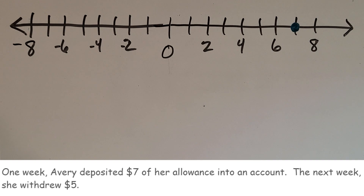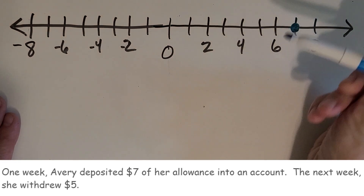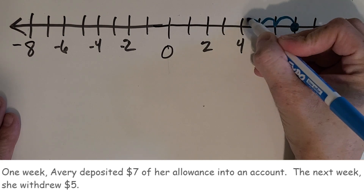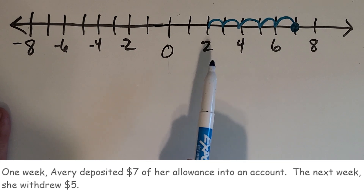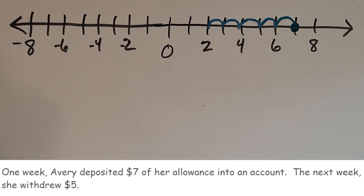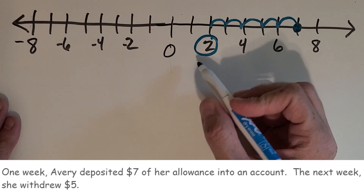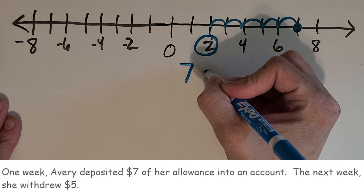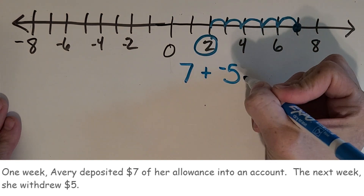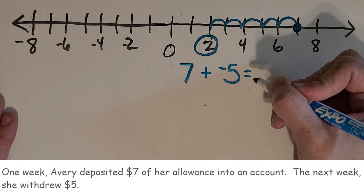Then she withdrew five — she's taking away five. So let's go this way on the number line and count it out: one, two, three, four, five. So how much money does she have in her account now? She has $2 in her account. And we can write that as an addition problem: she had $7 plus negative five, and what do we end up with? Two.